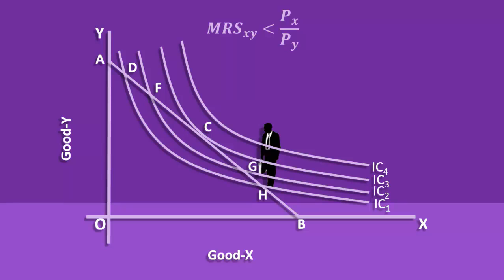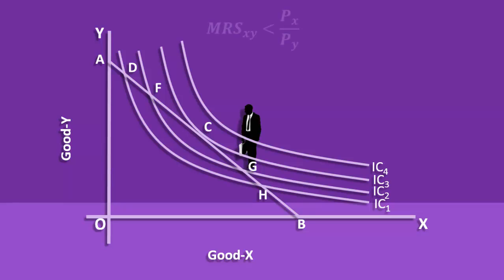Moreover, the marginal rate of substitution of X for Y is less than the price ratio. The consumer, in order to reach a higher Indifference Curve, reallocates his budget and substitutes good Y for good X. He substitutes Y for X and moves to point G. This combination is on Indifference Curve 2. In this case also, the marginal rate of substitution of X for Y is less than the price ratio.